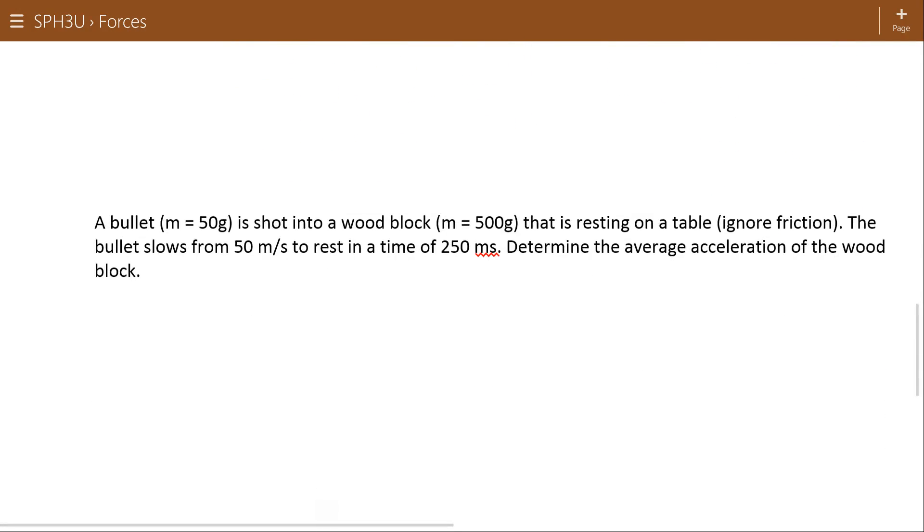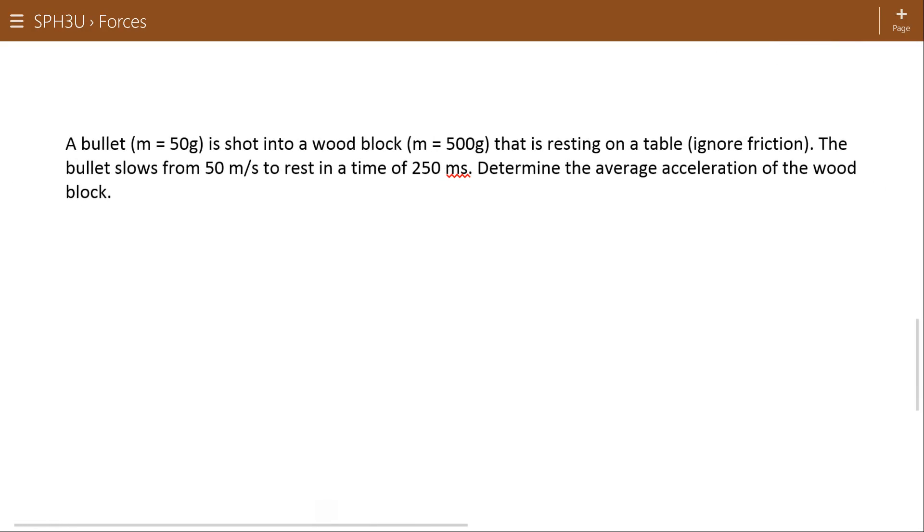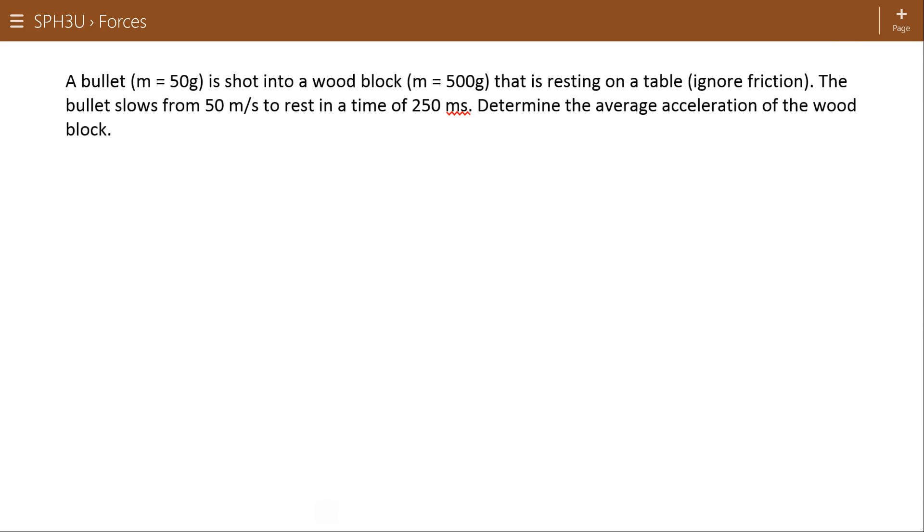Alright, one more here. Here we go. This is sort of the opposite of the problem that I was talking about when I was coming at this in the first place. So we had a 50 gram bullet. It's being shot into a block of wood, half a kilogram, that is resting on a table. We're going to ignore friction. The bullet slows from 50 to rest in a time of 250 milliseconds. Determine the average acceleration of the wood block.